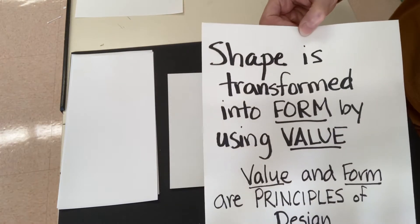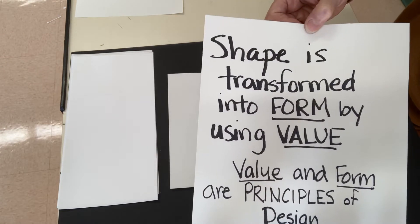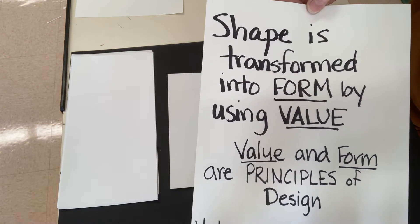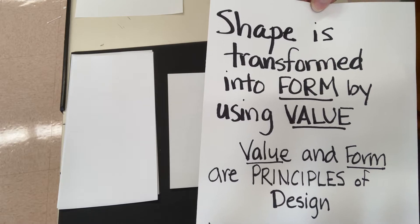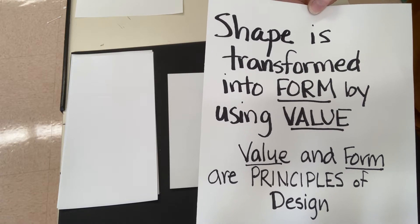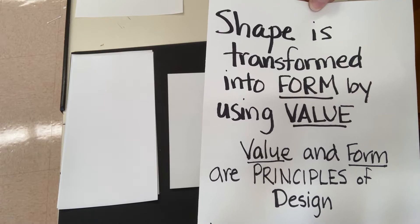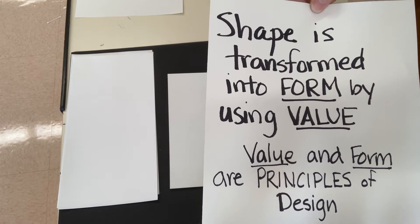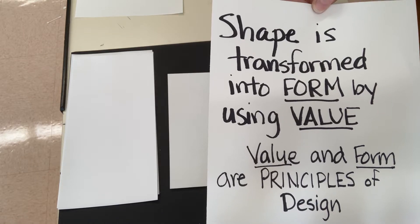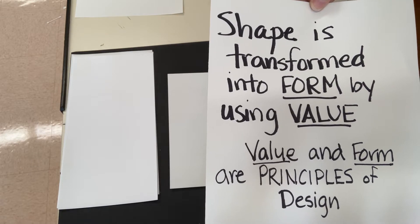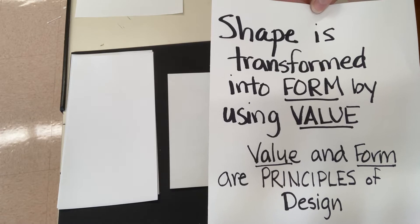Because line creates shape, we can say that shape is transformed into form by using value. It's the example of drawing a circle and then using value in order to transform it into a sphere or a ball.